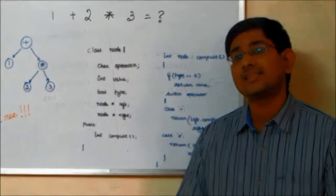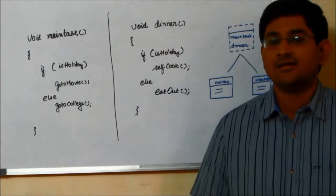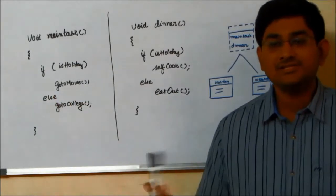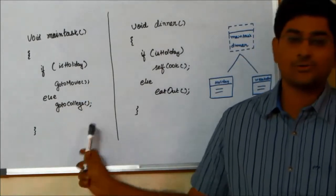Let us just see another example. Almost all classes have a state variable or a flag. For example, this is holiday flag. If is_holiday is true, then go to movie. Else go to college.